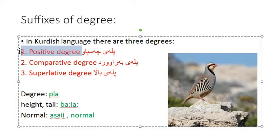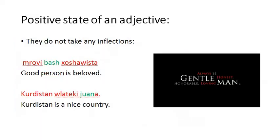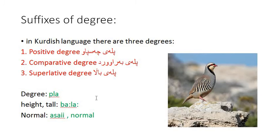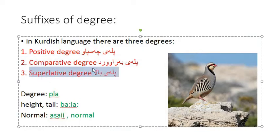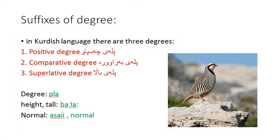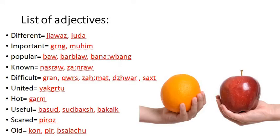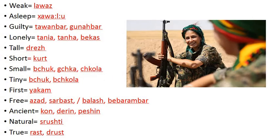This lesson by itself is short because the rules of comparative and superlative degree are very easy. I prepared a list of 50 adjectives to make the lesson more beneficial. I'm going to talk about each one of these words, pronounce them, and explain the differences, because some adjectives have more than one term in Kurdish.